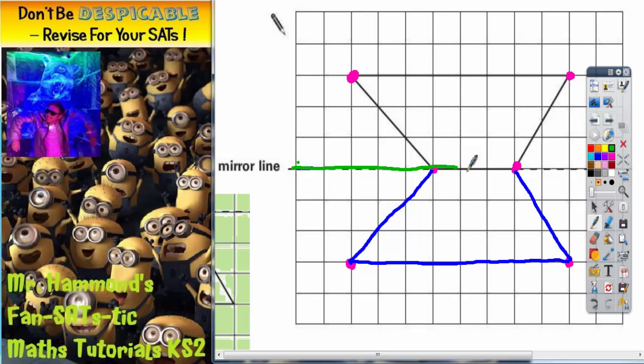That's very important. Now once you've traced this you need to flip the tracing paper over. When we say flip over we definitely do not mean rotate it. Flipping over and rotating is two completely different things.